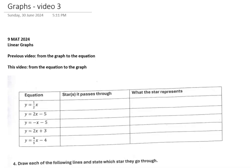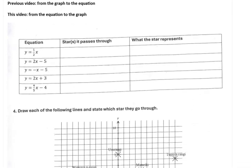Kia ora year 9, here's video 3 and in this one I'm going to go from the equation to the graph. So this is the task we did in class with the stars of Matariki. So to do this, we have to first figure out which star does the equation go through and then we'll put in what the star represents.